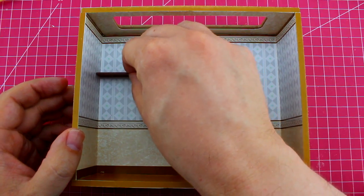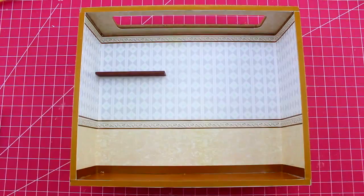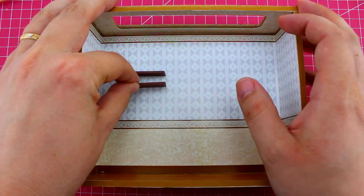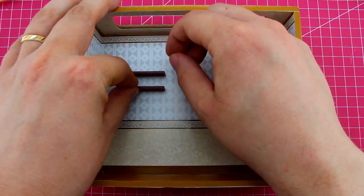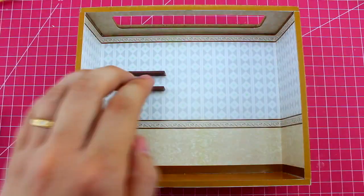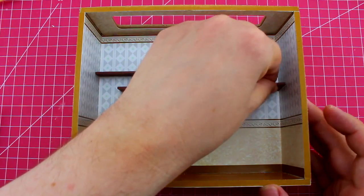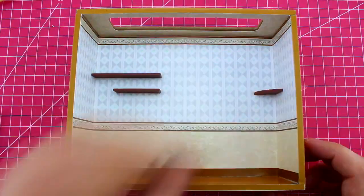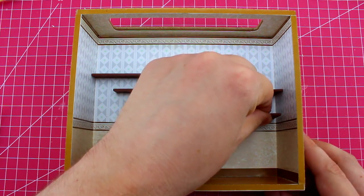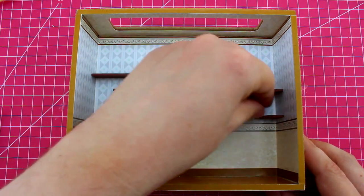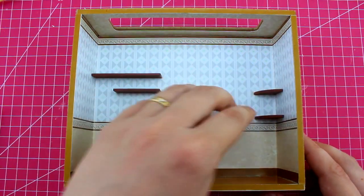And we'll put in some shelves. We're actually starting to assemble the actual room itself, and the wallpaper here assisted quite a bit because it made it very easy to line everything up. Those lines and those diamonds made it easy to make sure you had everything nice and straight and even. So that was a nice touch. I don't know if they did it on purpose that way, but it worked out very nicely.